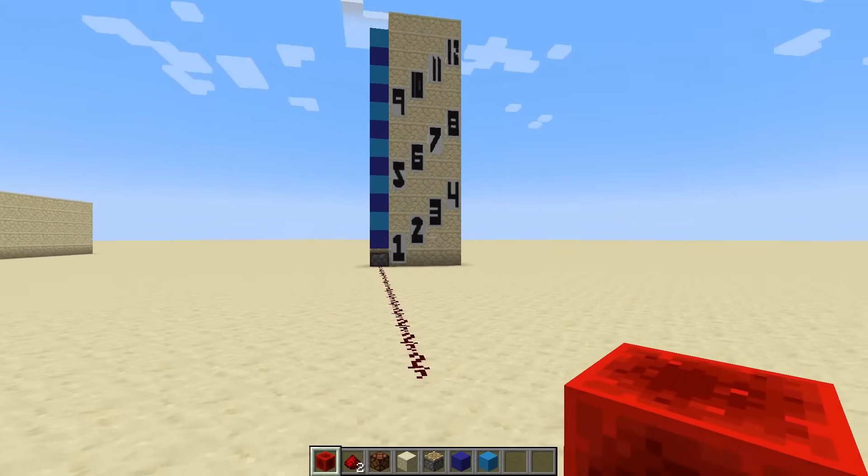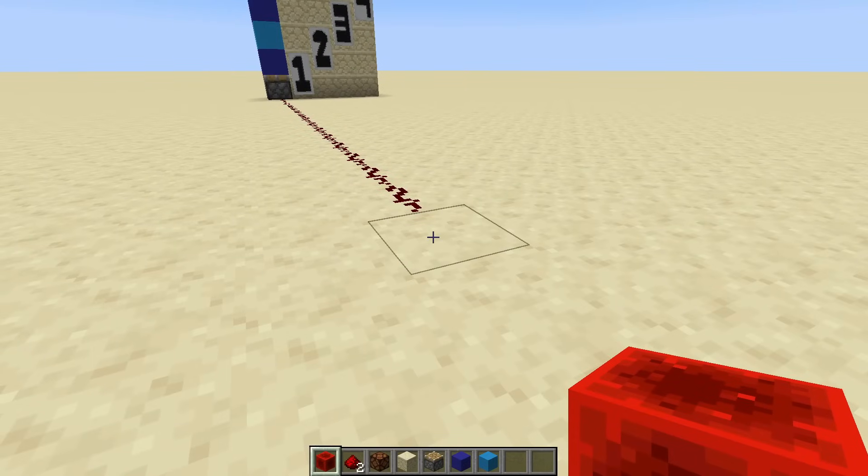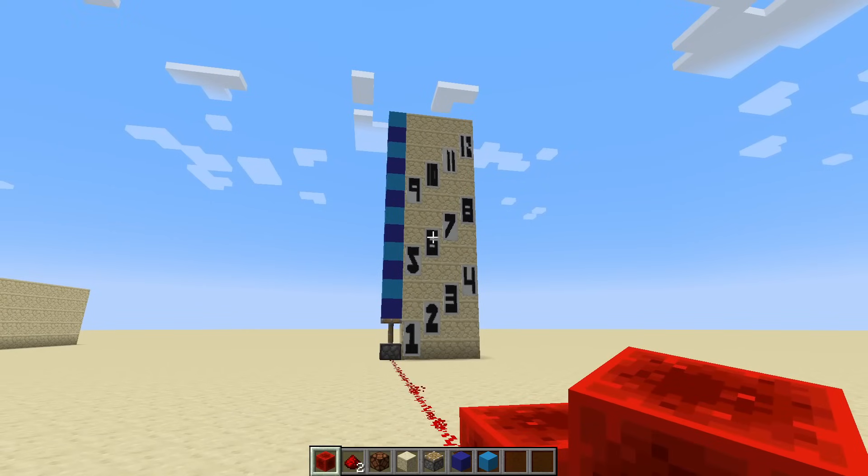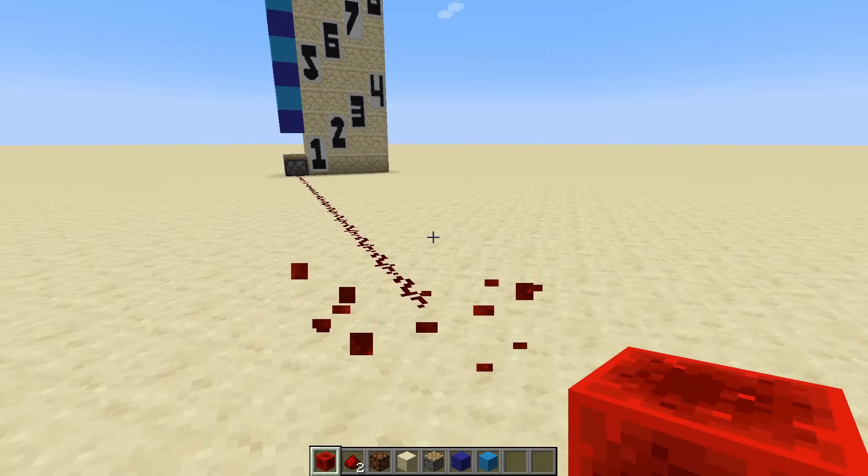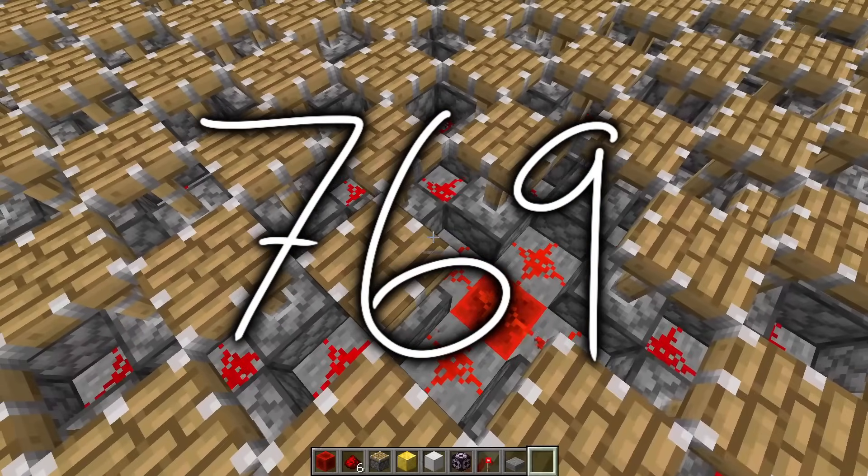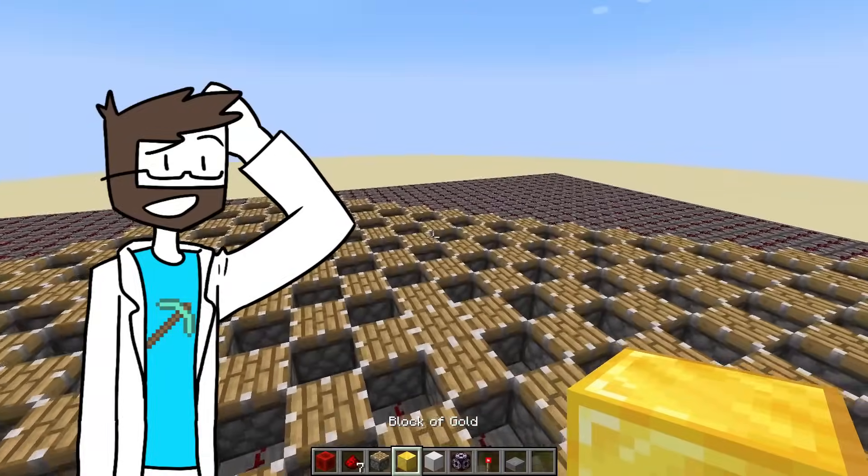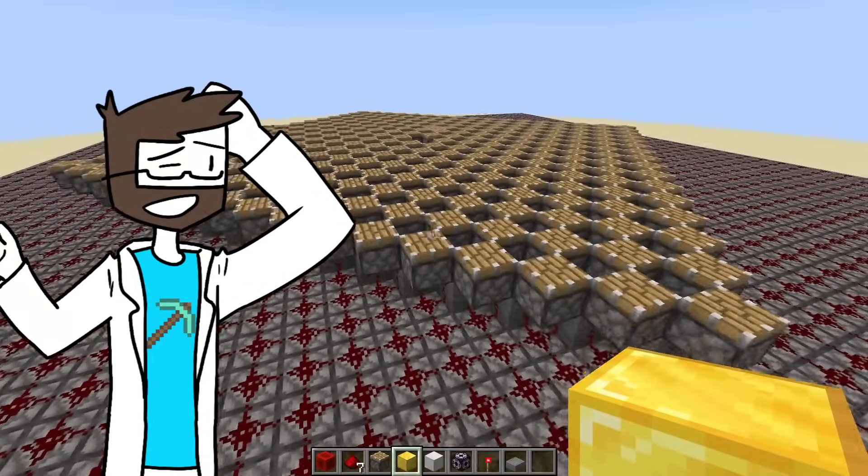To determine the power created by a single block, I'll be using pistons to move as many blocks as I can fit around it. A piston can move 12 blocks, and I was able to power 769 pistons with this setup. Now, I'm not sure if that's the maximum, but this is what I was able to get.